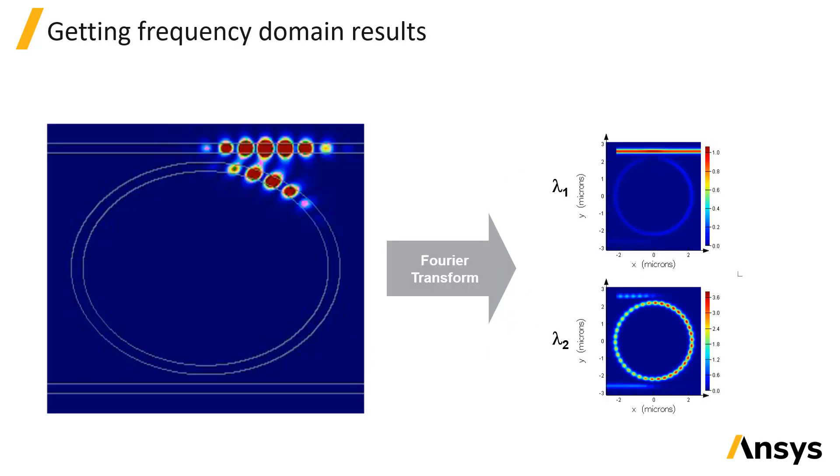We can consider a more interesting problem for FDTD which is a ring resonator. Here we use a pulse to inject a modal field into an input waveguide. We can see that the pulse is so short that we don't even see it overlap with itself in the time domain simulation.